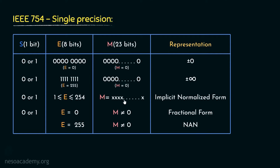Here the mantissa 23 bits are represented using x, meaning all 23 bits can have either 1 or 0 in any bit position. For these bit sequences, we use the formula: minus 1 raised to the power of the sign bit, multiplied by 1.M — which specifies the implicit normalized form — multiplied by 2 raised to the power of the biased exponent minus the bias, which is 127. This formula helps us decode the floating point number stored in the 32-bit register.